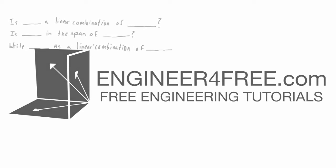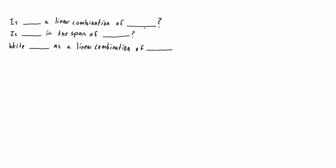Welcome back. We are talking about linear algebra, and in this video I'm going to start talking about vector combinations and span. When you first start talking about vector combinations and span, there are a lot of different questions you can be asked, but often they are just different wordings of the exact same thing. We can say: is one vector a linear combination of some other vectors, or is one vector in the span of some other vectors, or write one vector as a linear combination of some other vectors. These three things are exactly the same and we solve them in exactly the same way.